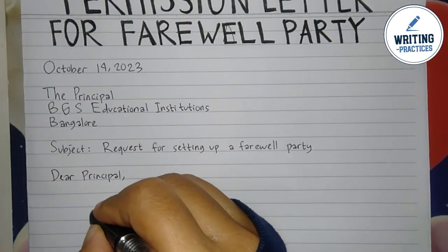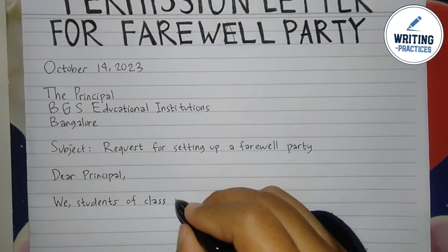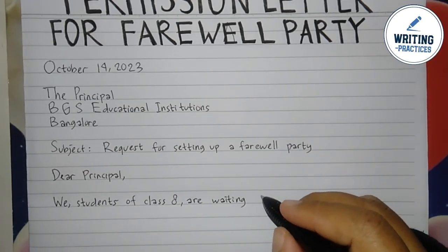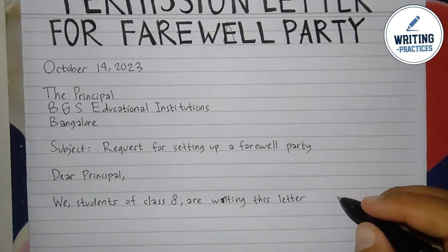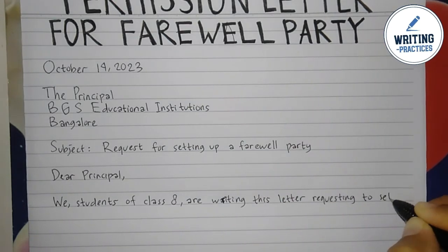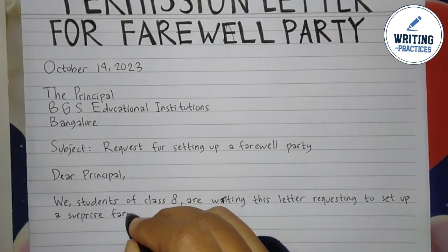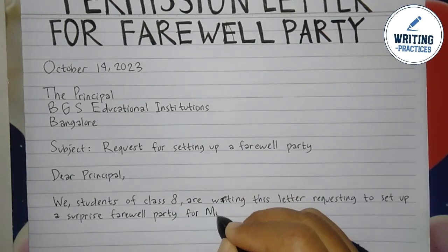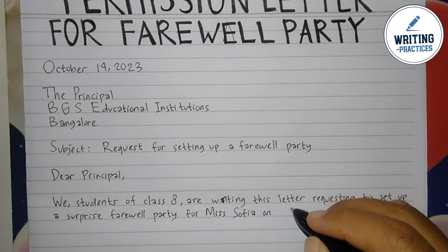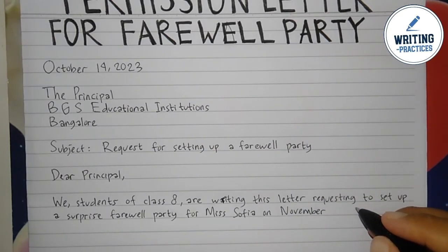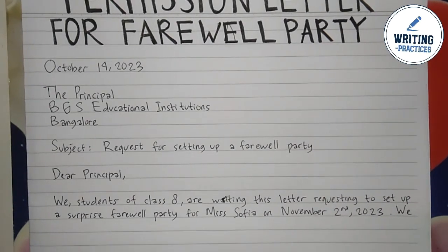In the first paragraph, introduce yourself first. In this example, the writer is writing this letter in the name of the class, so the writer mentions the name of the class. After that, write the reason why you are writing this letter. In this example, the writer wants to request permission to set up a surprise farewell party, and of course don't forget to mention whom this party is for — in this example, the party is for the teacher who is leaving soon, named Miss Sofia.